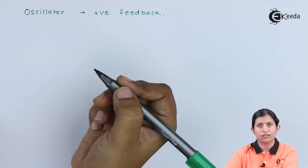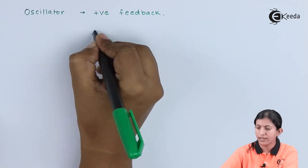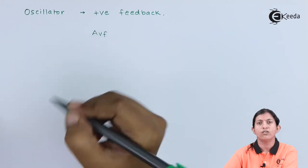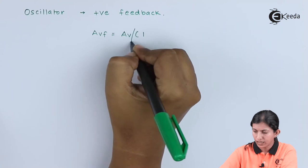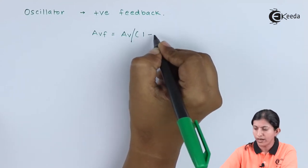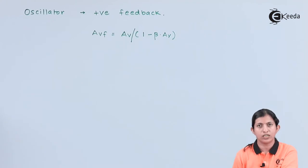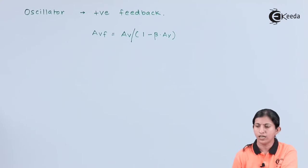In an oscillator, the voltage gain with feedback (AVF) is always greater than the voltage gain without feedback. AVF equals AV divided by 1 minus beta times AV. In positive feedback, as the voltage gain with feedback increases, it introduces instability in the circuit operation, and that circuit is nothing but the oscillator circuit.